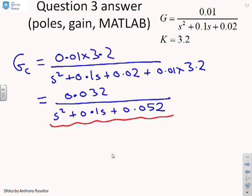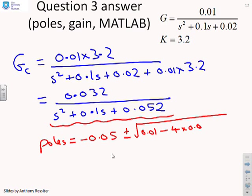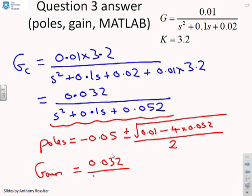So I can now solve for the poles from this pole polynomial there. And to do that, you can use your quadratic formula. So you're going to get the poles are going to be at minus 0.05 plus or minus the square root of 0.01 minus 4 times 0.052, divided by 2. So I'm not going to do that calculation. You can do that by yourself. And the gain, or the steady state gain I should say, is going to be 0.032 divided by 0.052.